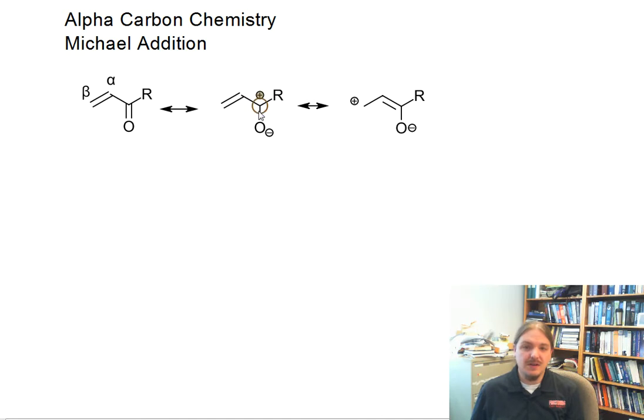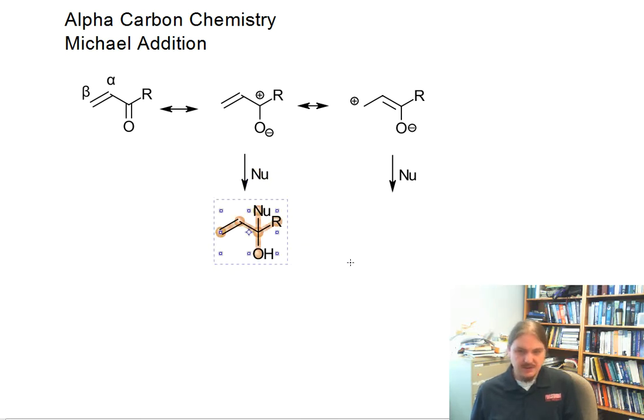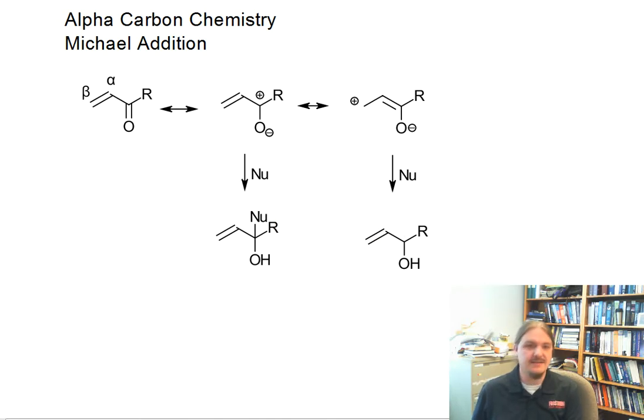There are two different electrophilic positions, and we have nucleophiles reacting at either position. Following proton transfer, we could get one of two different products. The Michael Addition reaction specifically refers to the second case where you get nucleophilic attack at the beta position and form this enol originally. The enol, of course, equilibrates to the carbonyl compound.